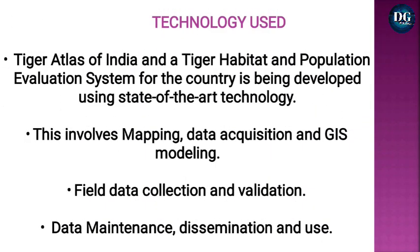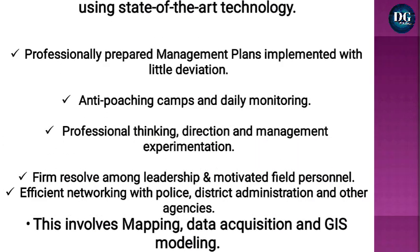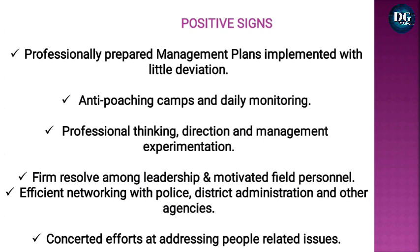A tiger atlas of India and a tiger habitat and population evaluation system for the country is being developed using state-of-the-art technology. This involves mapping, data acquisition, GIS modeling, field data collection and validation, and data maintenance and dissemination. Positive science, professionally prepared management plans, anti-poaching camps, daily monitoring, firm resolve among leadership, and motivated field personnel working efficiently with police, state administration, and other agencies are key success factors.